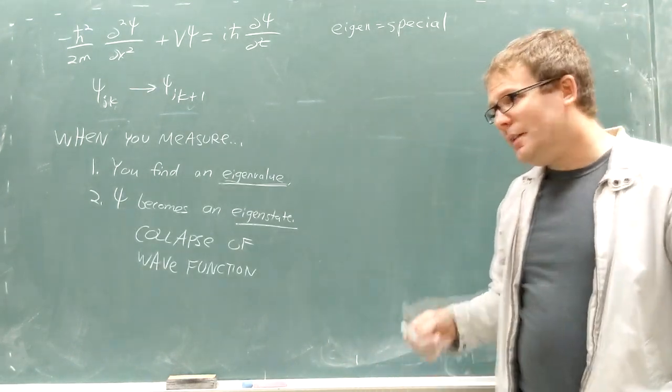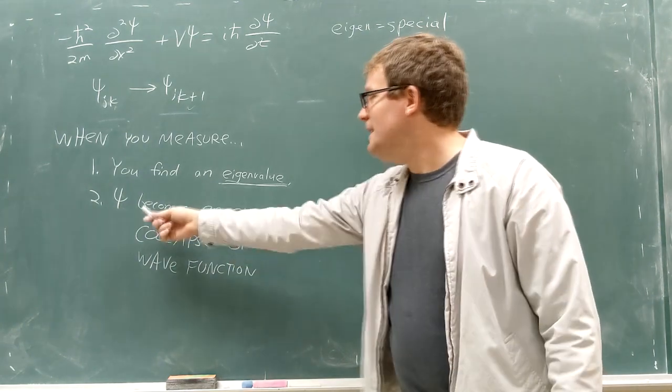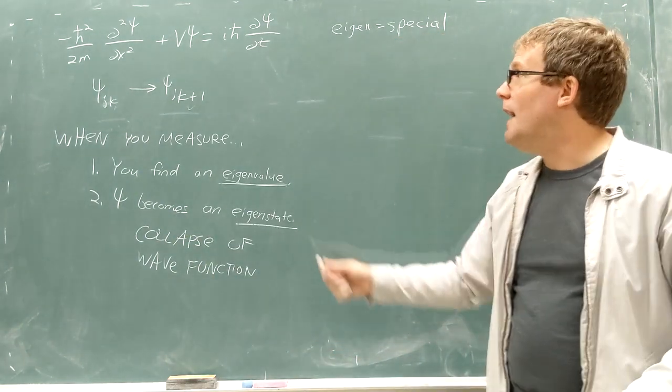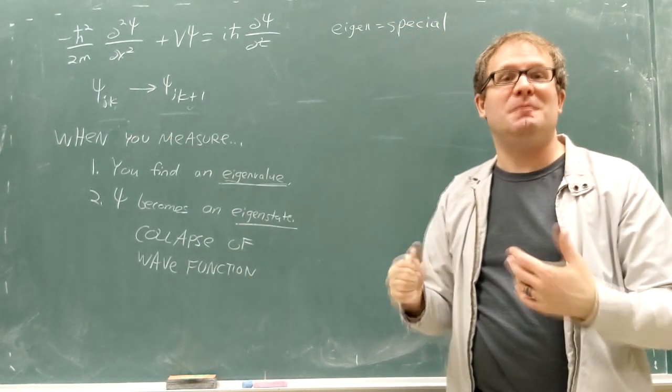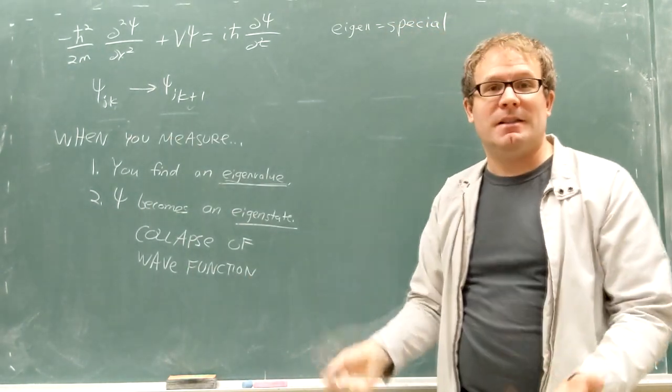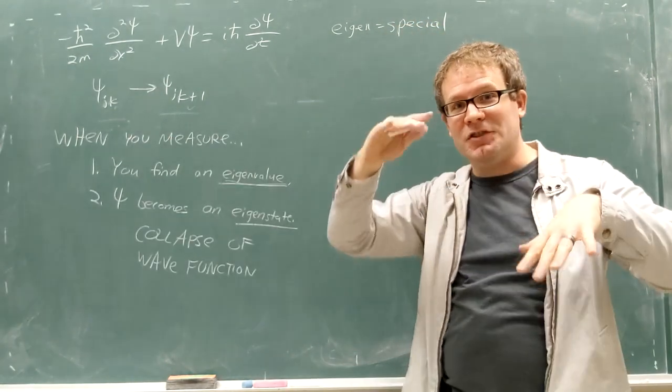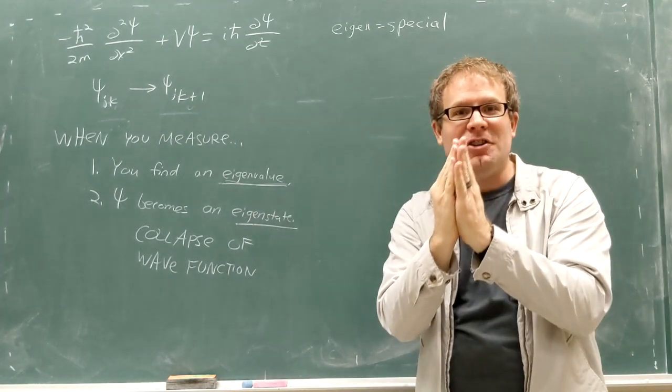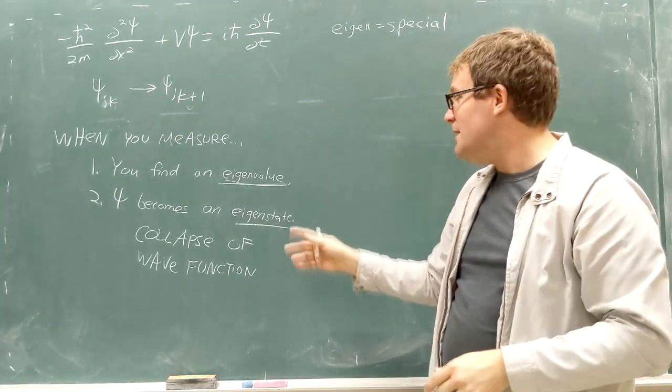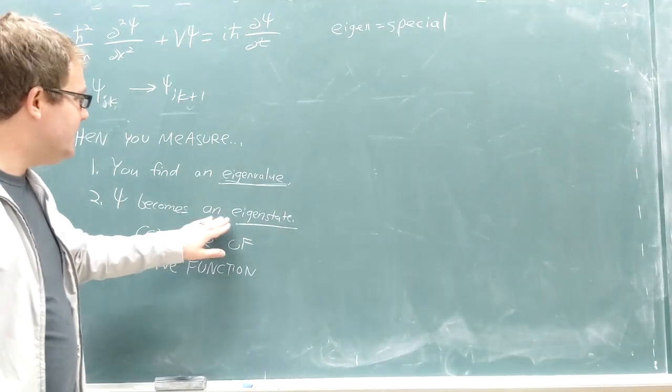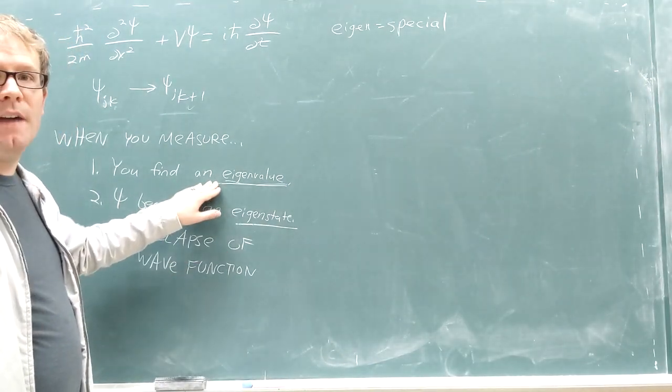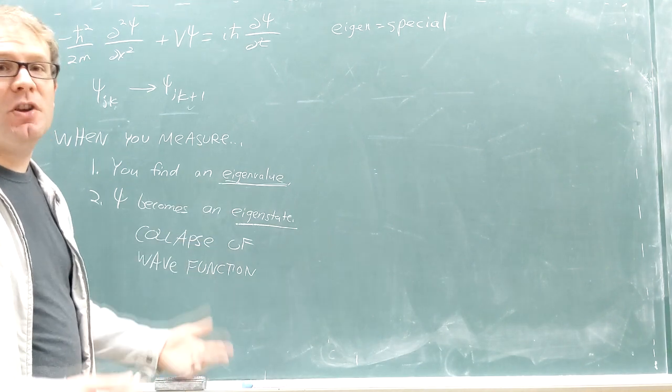So that's why we call it an eigenvalue, they are special values. The other thing that happens is that psi collapses down into an eigenstate, meaning you take this beautiful, wonderful psi that you have spent the last several minutes of computer time evolving the wave function into, and you collapse that shape down to the eigenstate associated with that eigenvalue. So every eigenstate has an associated eigenvalue, and vice versa.